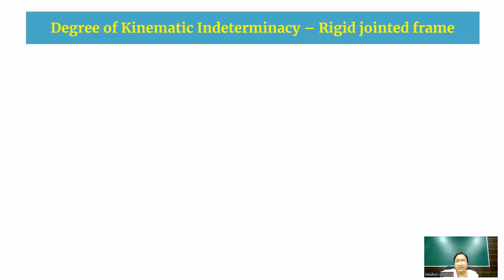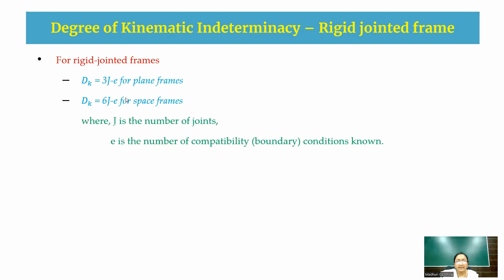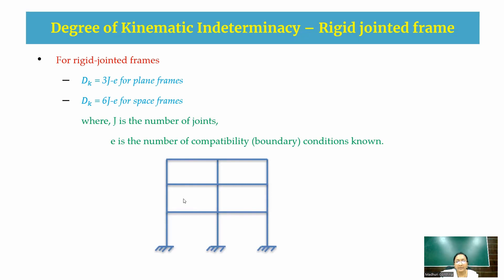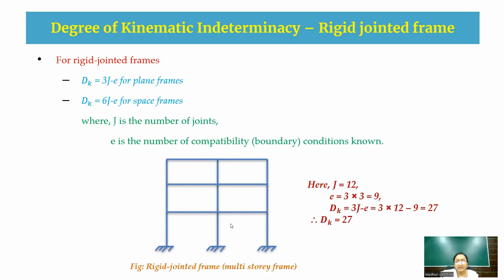For kinematic indeterminacy of rigid-jointed frames: for plane frames DK = 3J − e, and for rigid space frames DK = 6J − e. For the multi-story rigid-jointed plane frame with 12 joints and 3 fixed supports (each providing 3 compatibility conditions), e = 9. Therefore DK = 3(12) − 9 = 36 − 9 = 27.